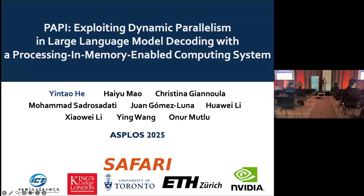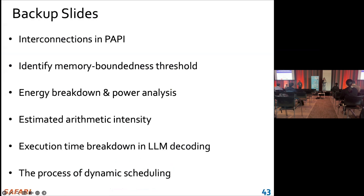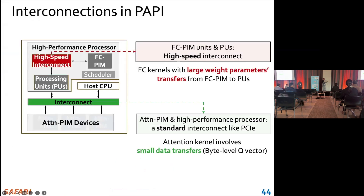Question: have you quantified the high-speed interconnect influence? Specifically, what kind of latency does the interconnect between the two compute systems need to have? You are exchanging data between the GPU and PIM eventually — what is the influence of the interconnect and how fast does it need to be?